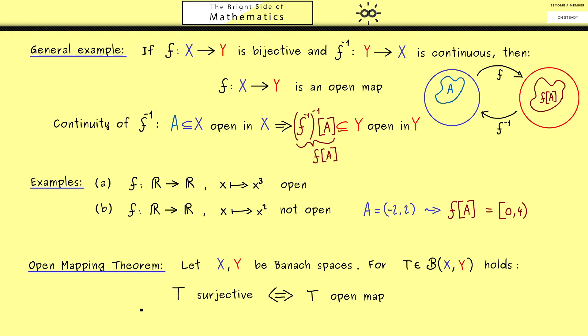And that is the famous open mapping theorem. It just tells you that surjectivity for a linear bounded operator between Banach spaces is a strong property, because it implies the openness.